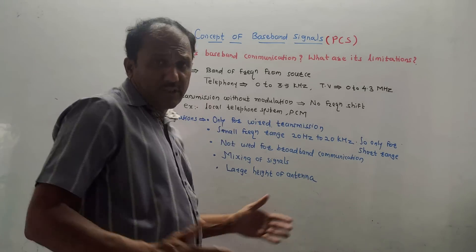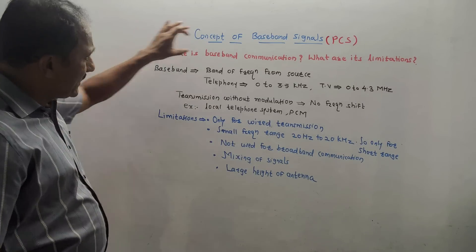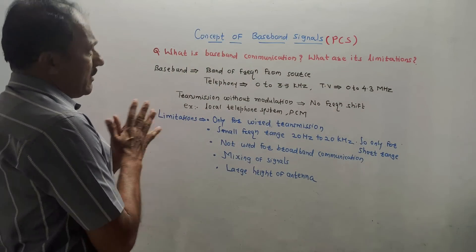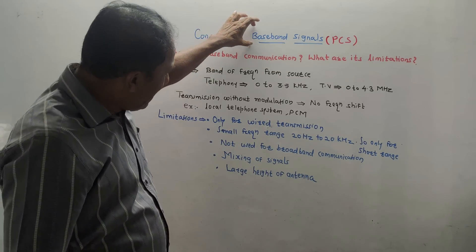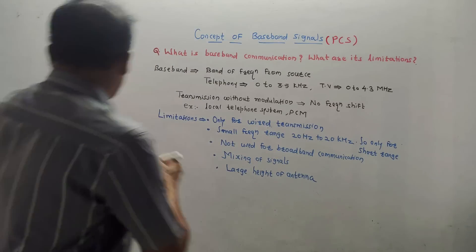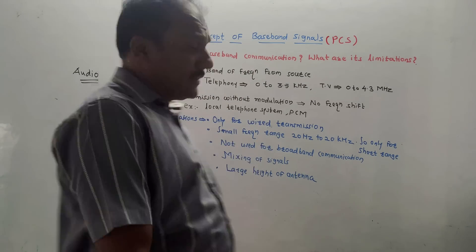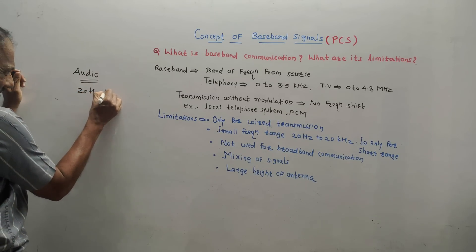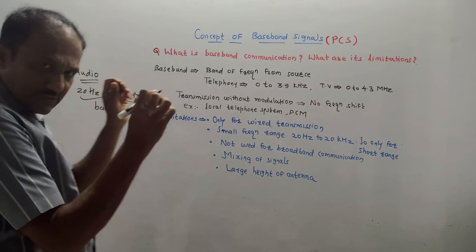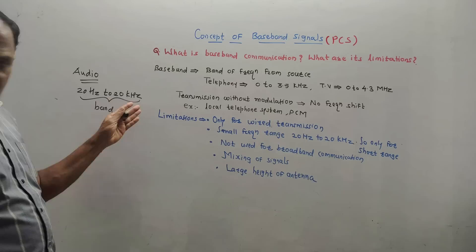Now the most important part from this chapter: the concept of baseband signals. Questions may be asked as: what is baseband communication, define baseband signal, or what are its limitations. As the name indicates, 'band' means a certain frequency range. For example, for audio signals, the frequency range is 20 Hz to 20 kHz, which is known as the band of frequencies.